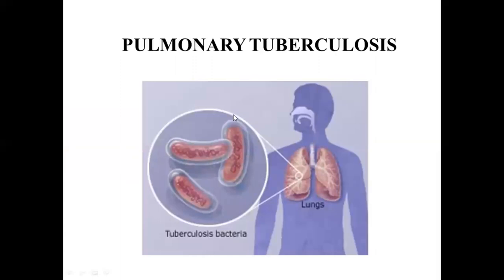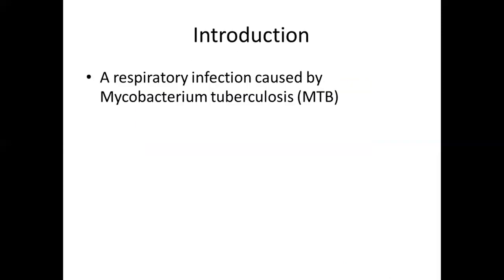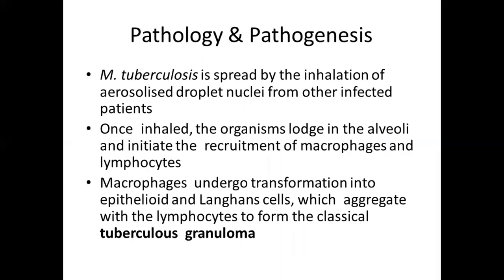Moving on to pulmonary tuberculosis specifically: pulmonary tuberculosis means tuberculosis of the lung parenchyma, and as already discussed, it is a respiratory infection caused by Mycobacterium tuberculosis. Now moving on to pathology and pathogenesis: Mycobacterium tuberculosis is spread by inhalation of aerosolized droplet nuclei from other infected patients.